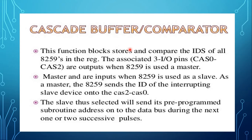The cascade buffer or comparator uses bidirectional lines CAS0, CAS1, and CAS2. These lines are used in cascade mode only. In slave mode they function as input lines; in master mode they function as output lines. The slave program and enable line is an active low bidirectional control line used to select the line in buffered or non-buffered mode.